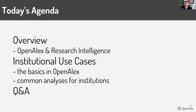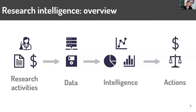We'll talk specifically around some common use cases of institutional research intelligence for OpenAlex, and also the basics, so that even the ones that aren't covered yet, you leave here with a sense of how to do it yourself. If you haven't heard the term research intelligence before, at a really high level, it's the idea that research activities are happening around the world, and you can collect data on those activities and get intelligence from that — doing analyses to inform actions like new policies, new funding programs, or just guiding your research as a researcher.